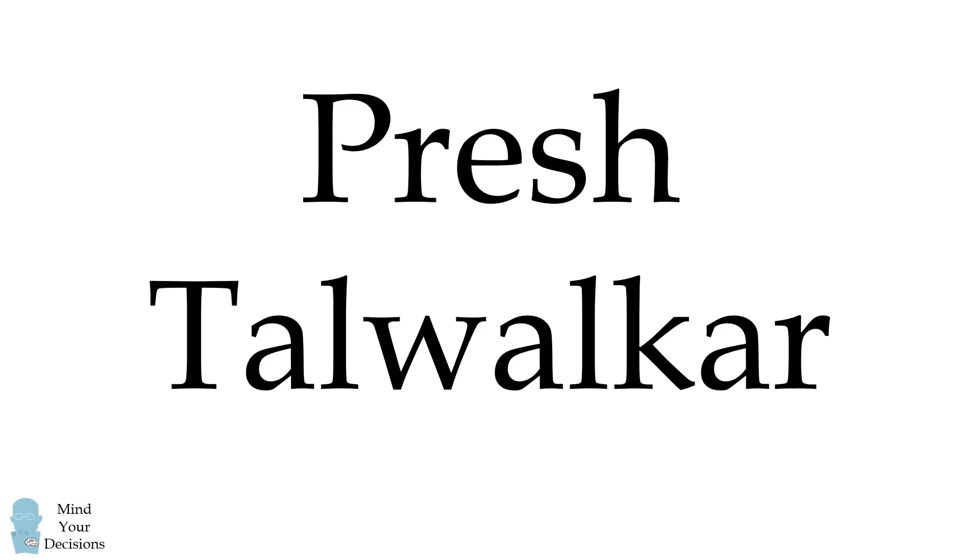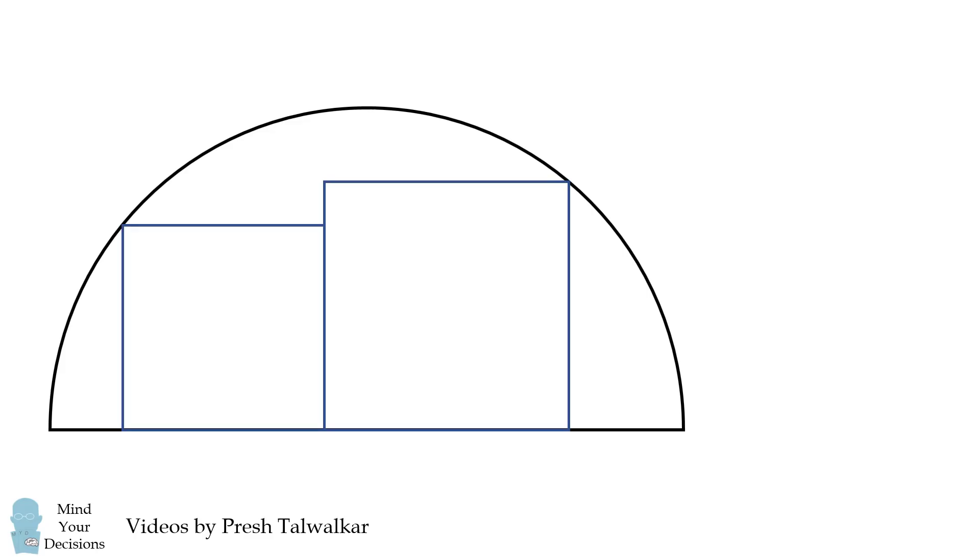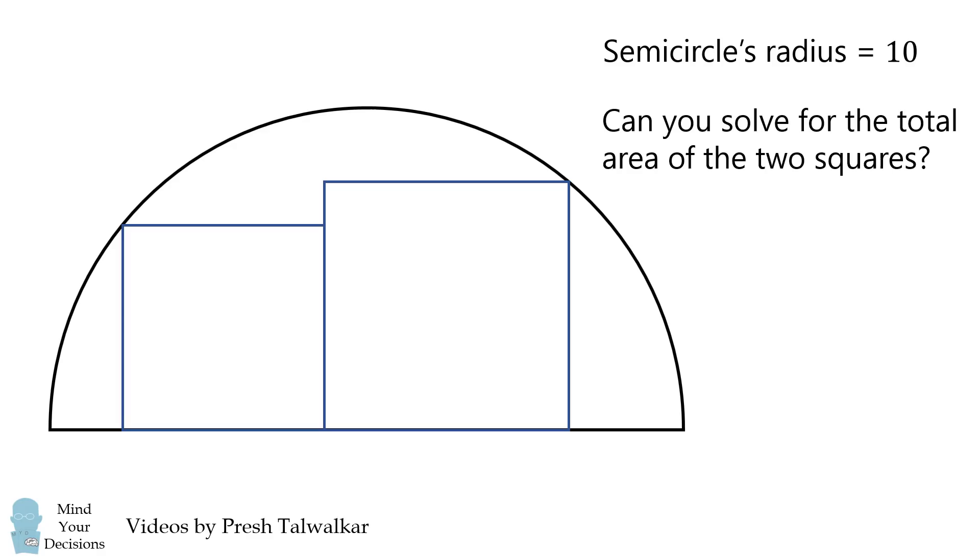Mind your decisions, I'm Presh Talwalkar. Inside a semicircle, two side-by-side squares are inscribed. If the semicircle's radius is equal to 10, can you solve for the total area of the two squares?